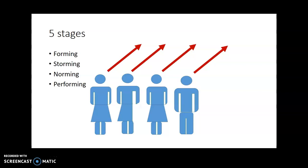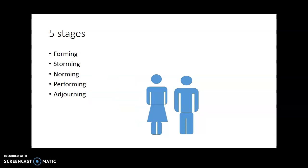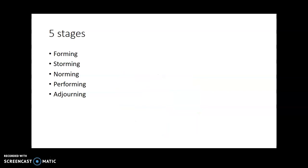Terminating a project happens when the group has reached the end of its life cycle. Depending on the group, they may require time to prepare to wind down the group's activities. For example, therapy groups must conclude their work in a way that equips all participating members with the skills to continue when the group's work has been completed.